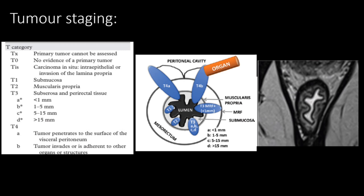T3 is further subdivided: T3a if less than 1 mm is involved, T3b if 1 to 5 mm, T3c if 5 to 15 mm, and T3d if greater than 15 mm of extramural invasion. T4a — tumor penetrates to the surface of the visceral peritoneum. T4b — tumor invades or is adherent to other organs or structures.